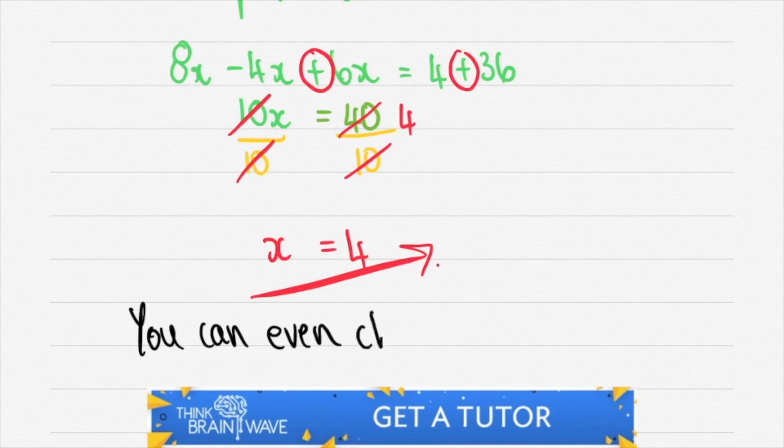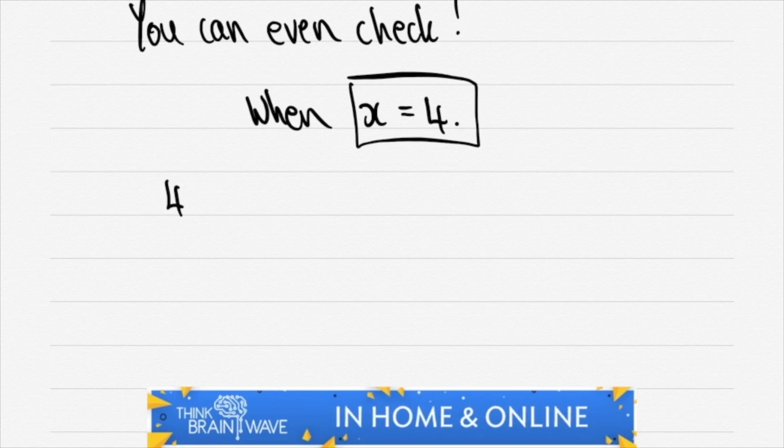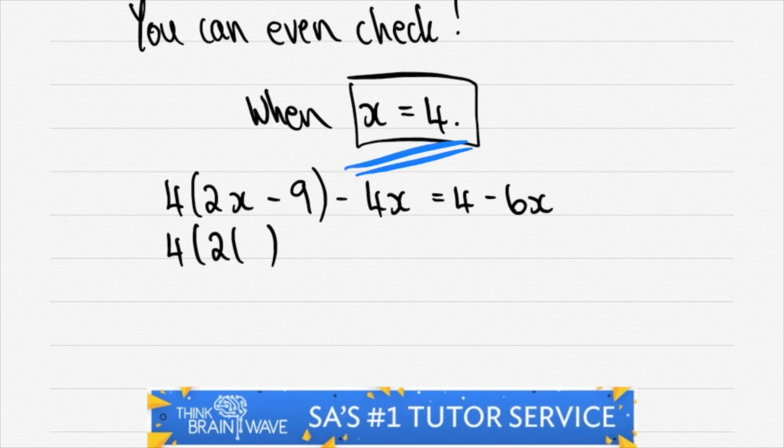You can even check this answer. So when x is equal to 4, 4 times 2x minus 9 minus 4x is equal to 4 minus 6x. What we do now is we sub the 4 into any place where there is an x.